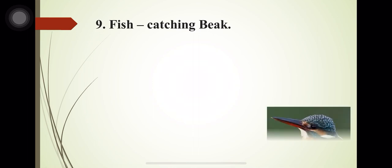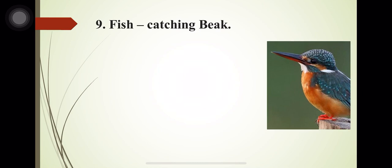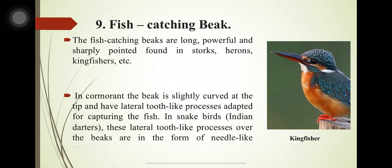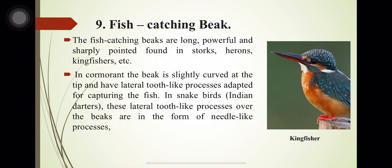The fish-catching beak is long, powerful and sharply pointed, found in storks, herons and kingfishers. In cormorants, the beak is slightly curved at the tip and has a lateral tooth-like process adapted for capturing fish.